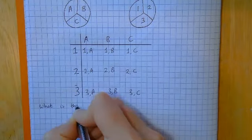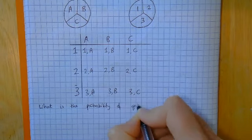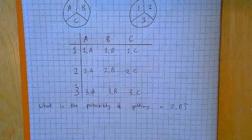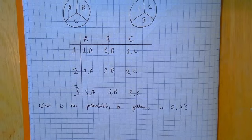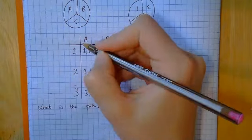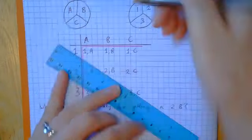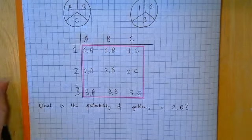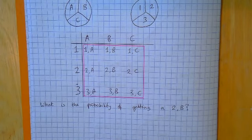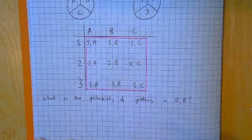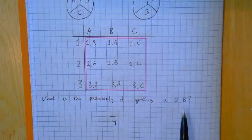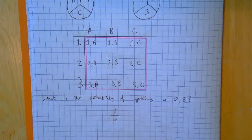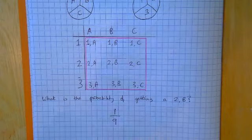What's the kind of thing they could ask? They might say: what is the probability of getting a two and a B? We ask ourselves two questions looking at the outcomes in the table — not the edges, just the entries. How many outcomes are there altogether? Well, I've got nine. And how many times does two-B appear? Just once. So the probability is one ninth. Probabilities are often given as fractions.